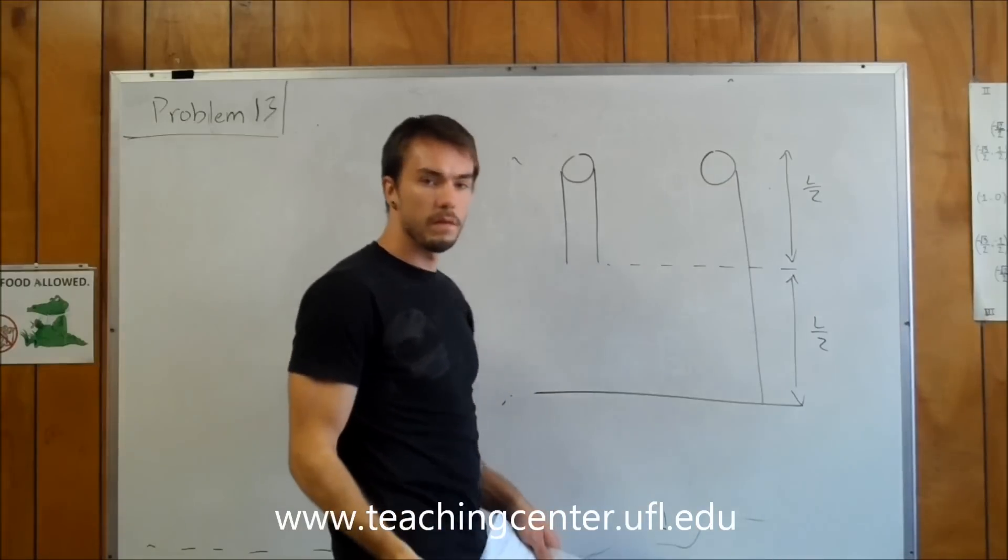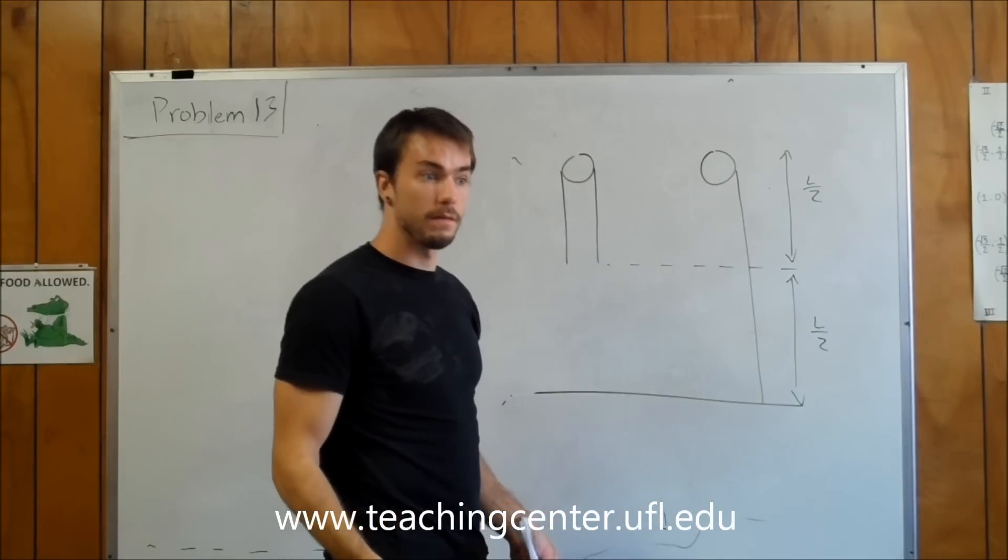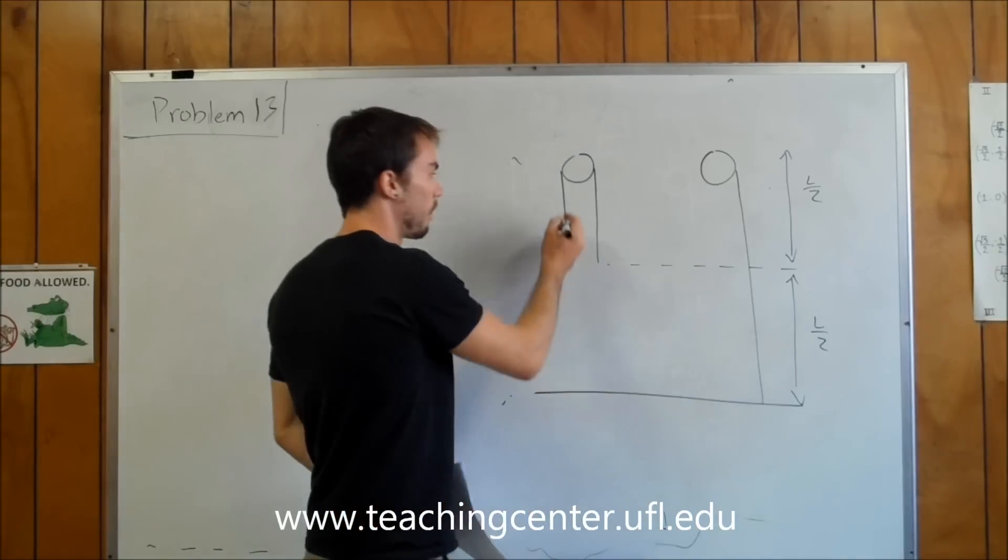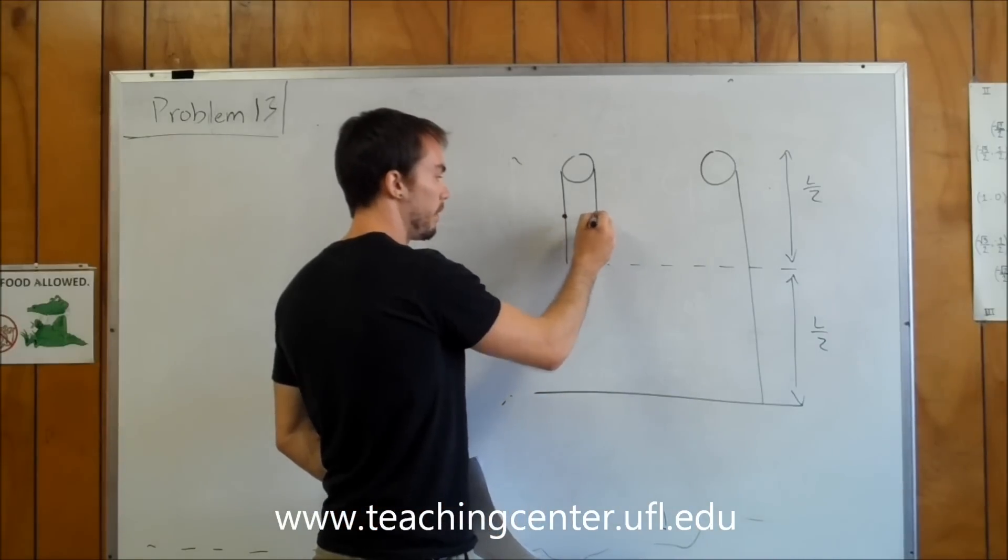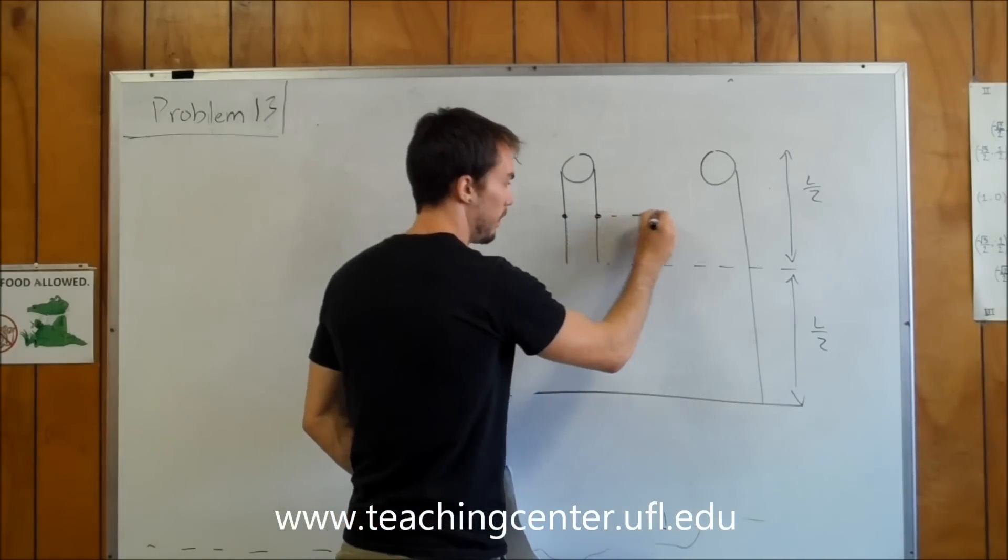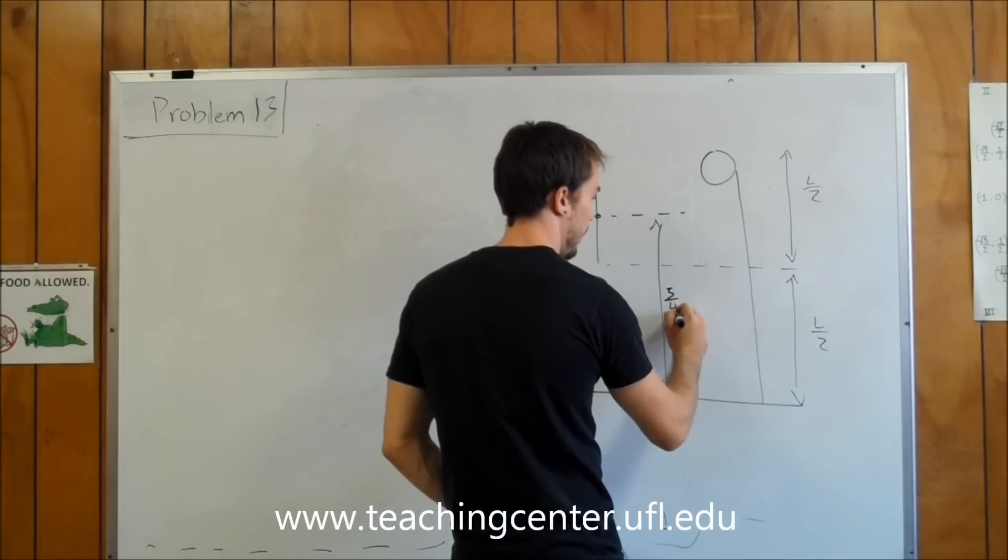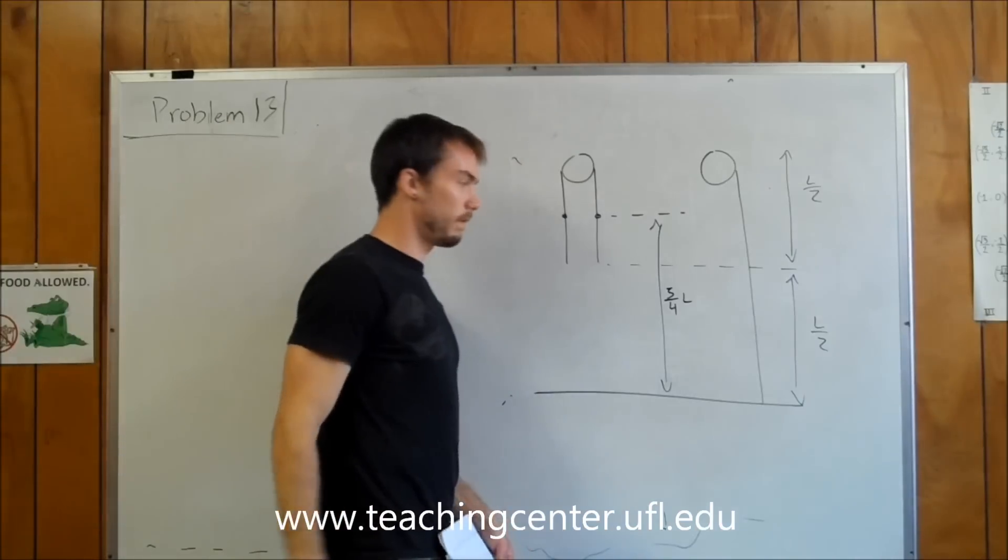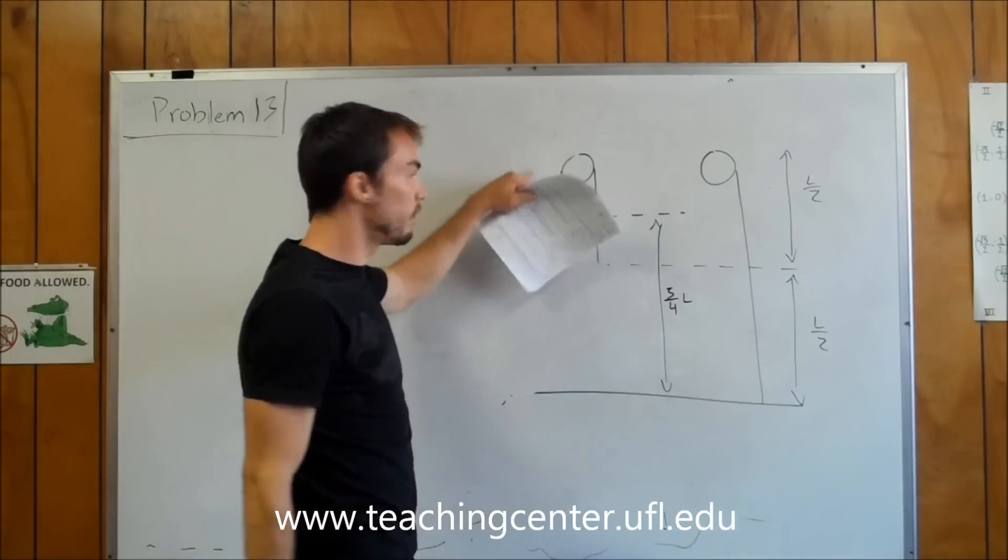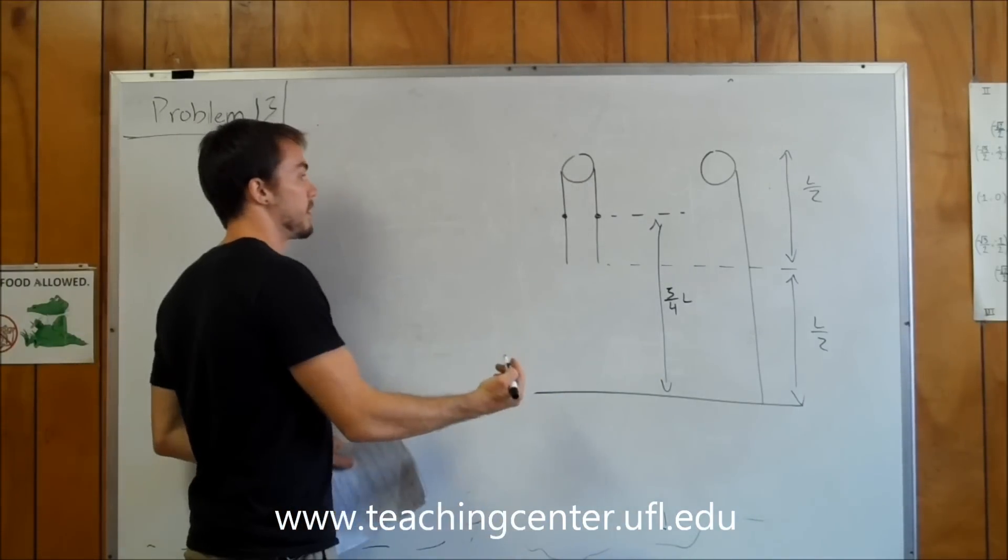Now when you're dealing with potential energy, what matters is where the center of mass is. So if we're looking at this half of the rope and this half of the rope, the center of mass is going to be right here at 3/4 of L. To start off with, because neither of them is moving originally, they both have potential energy.